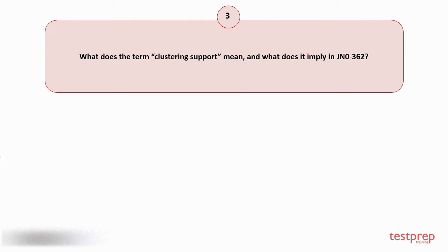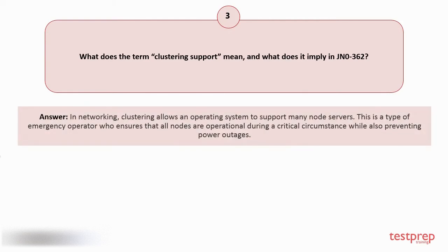Question number three: What does the term clustering support mean and what does it imply in JN-0362? Your answer is: In networking, clustering allows an operating system to support many node servers. This is a type of emergency operator who ensures that all nodes are operational during a critical circumstance, while also preventing power outages.